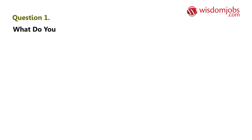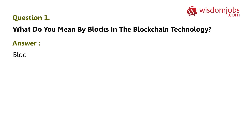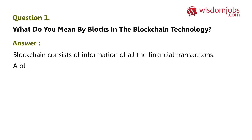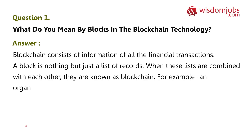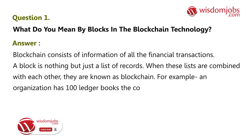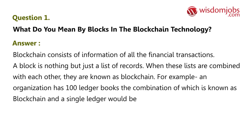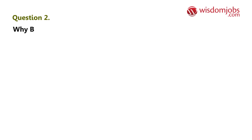Question 1: What do you mean by blocks in blockchain technology? Answer: Blockchain consists of information of all the financial transactions. A block is nothing but just a list of records. When these lists are combined with each other, they are known as blockchain. For example, an organization has 100 ledger books, the combination of which is known as blockchain, and a single ledger would be considered as a block.